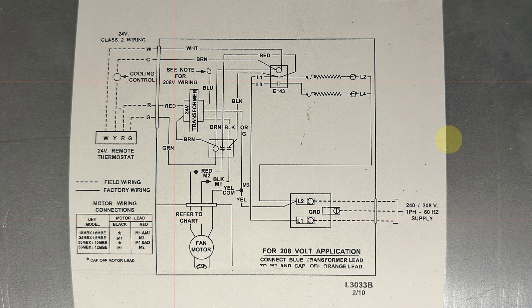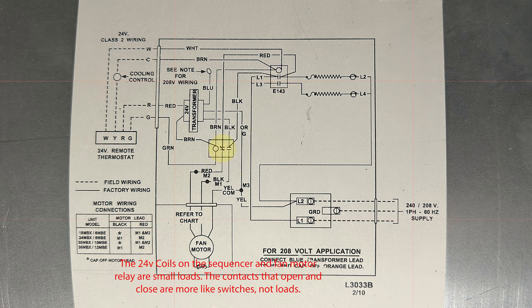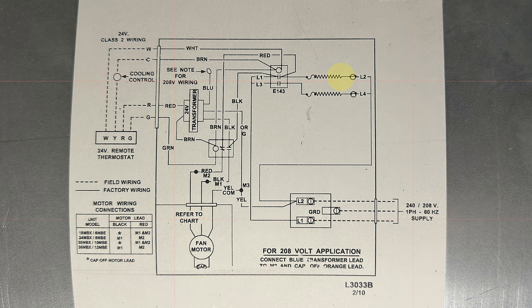Now what I did here is I went ahead and labeled the loads, or I'm sorry, not the loads, the switches because the sequencer and the fan relay are switches. They are not loads. The heater right here, heater circuit two, heater circuit one, and this is the heater itself. These are the loads. This is what makes the amps come up.